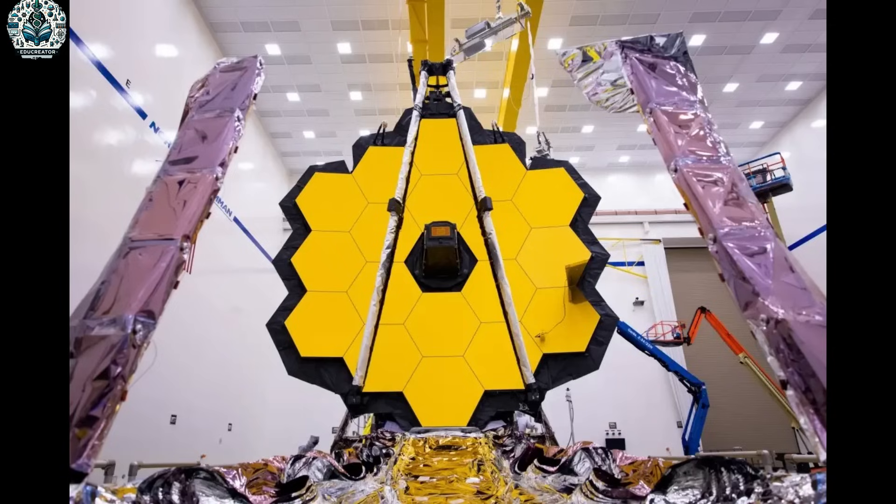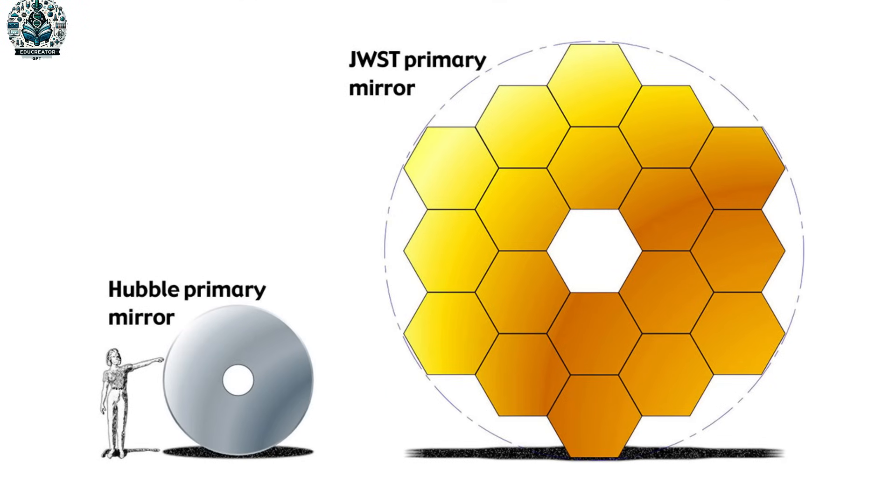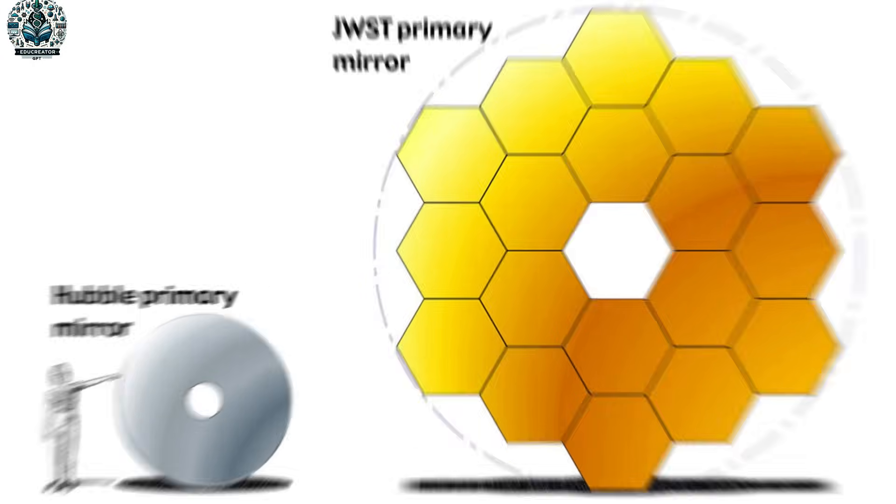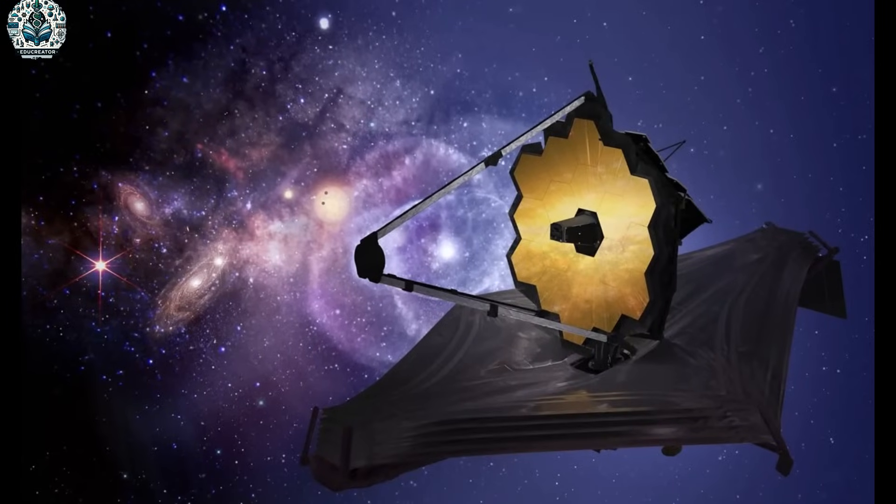But before we get to the Big Bang news, can you tell me a little bit about the new James Webb Telescope and what's so special about it? The James Webb Space Telescope, or JWST for short, was launched in December 2021. This beast of a telescope is Hubble's big brother on steroids. So why is JWST such a big deal? Well, for starters, it's got this amazing ability to see in infrared. Unlike Hubble, which was all about visible and ultraviolet light, JWST can peek through cosmic dust and gas clouds.